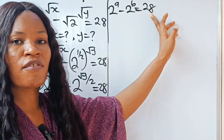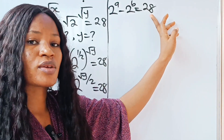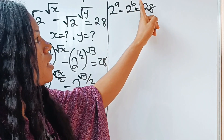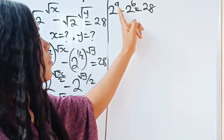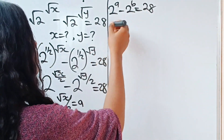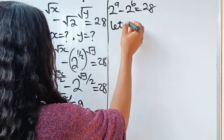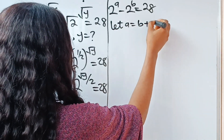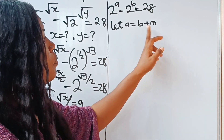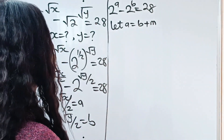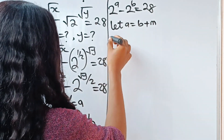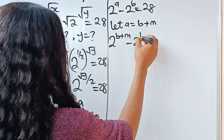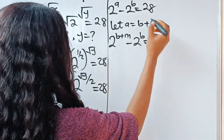Because we have a positive number here, that simply means that a is greater than b. That means we can say let a be equal to b plus m. So we can now rewrite this as 2 raised to the power of b plus m, minus 2 raised to the power of b, is equal to 28.